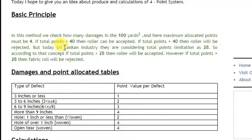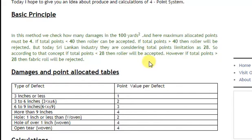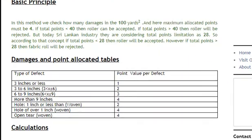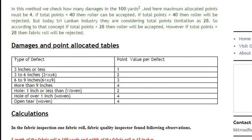In the Sri Lankan industry, they are considering a total point limitation of 28. So according to that concept, if the point value is higher than 28, the fabric roll will not be accepted; if lower than 28, the fabric roll will be accepted. You can follow the damages and points allocation table for the four-point system.